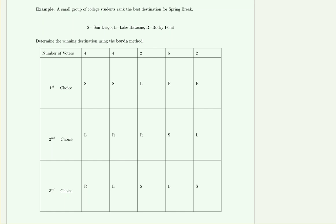In a similar example, a group of college students ranked the best destination for spring break: San Diego, the Lake, and Rocky Point. We're asked to determine the winner using the Borda method. First, count the candidates: one, two, three — so n equals three. Copy the diagram on your paper with spaces for point values.